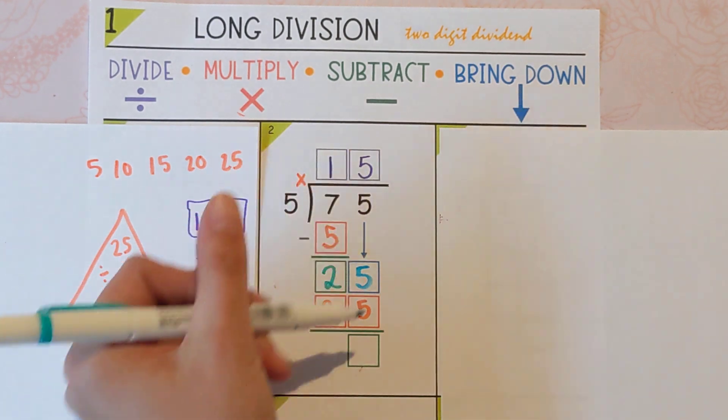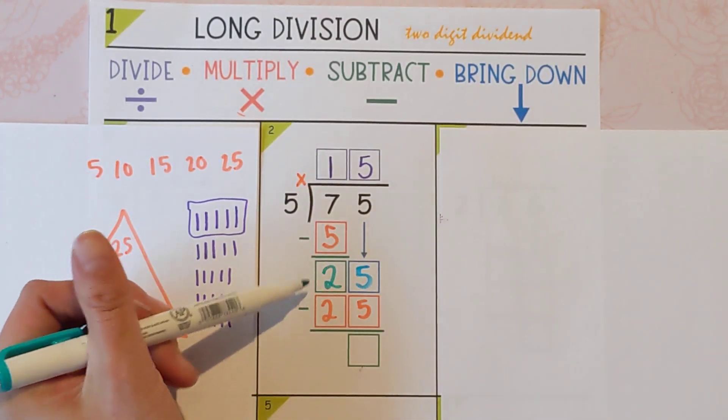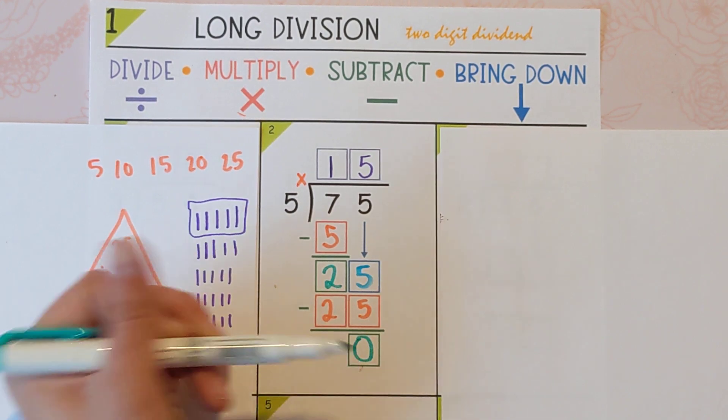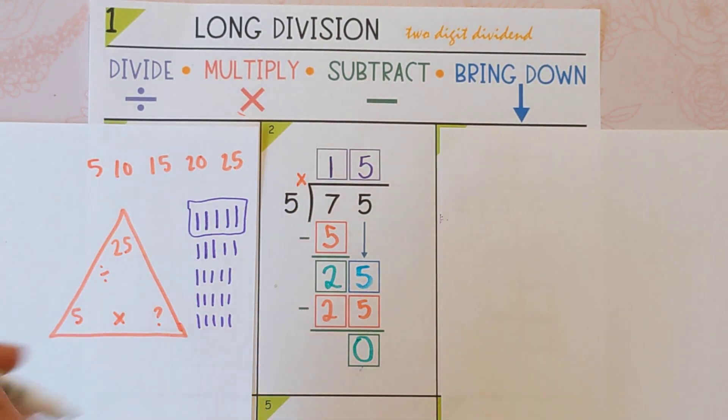And our last step is to subtract to see if there's anything left over. 25 minus 25 is 0, which means there's nothing left over. All right, so that's how we do our standard algorithm. Let's go through that one more time.